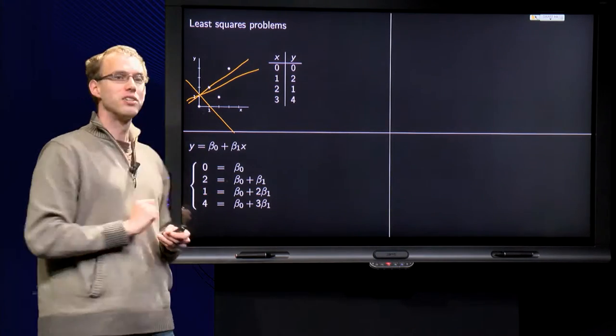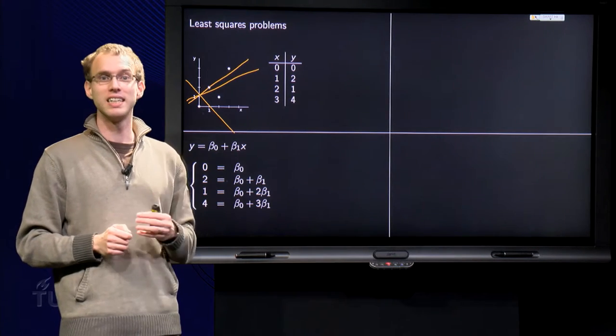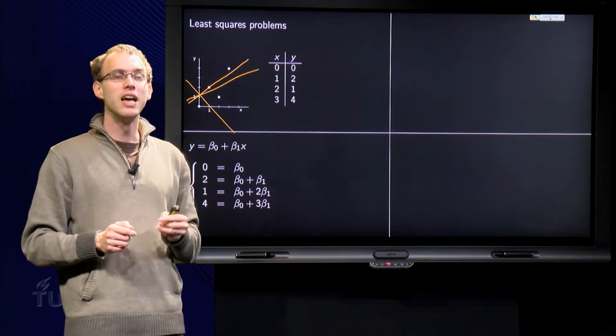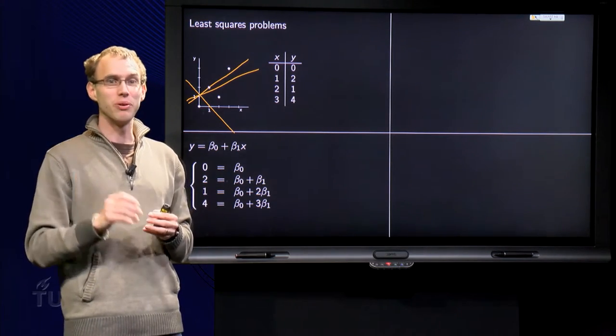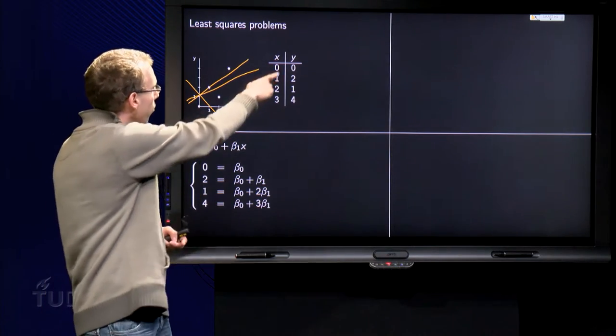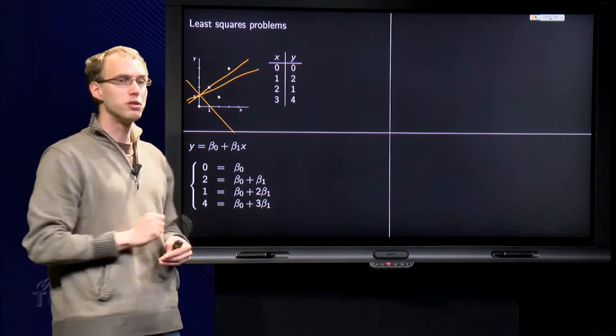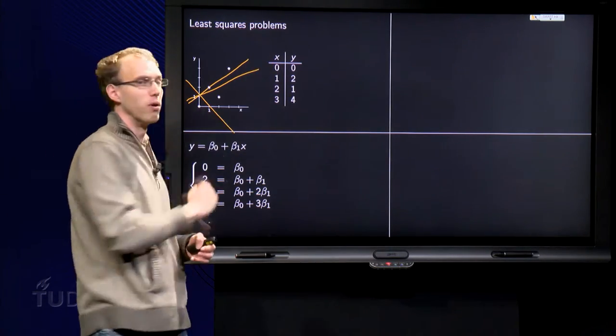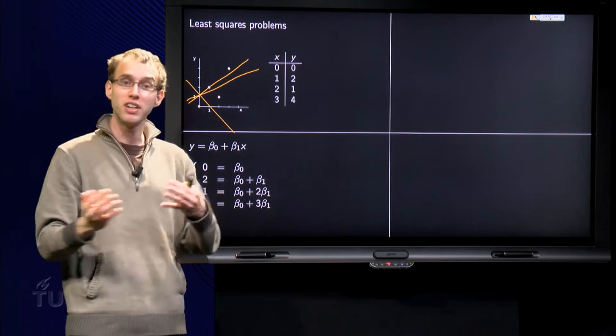I expect to have a line y equals beta 0 plus beta 1 times x, and I have to determine the optimal beta 0 and beta 1. Well, in the optimal case all points are exactly on the line, that means that all four points over here lie on the line y equals beta 0 plus beta 1 times x. So, if we substitute the first point, for example, we get y equals beta 0 plus beta 1 times 0.